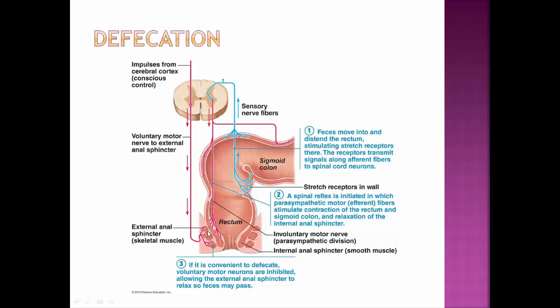The internal sphincter is involuntary and the external sphincter is voluntary. When parasympathetic impulses arrive, they relax the internal sphincter — that's involuntary, controlled by the parasympathetic nervous system. But we have conscious control over the external sphincter, so we can release feces by relaxing it when it's convenient to do so. Infants don't have that conscious control over the external sphincter until they become potty trained, which is why they have to wear diapers.